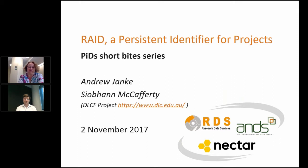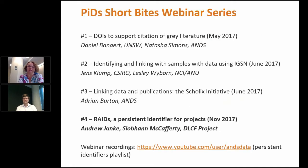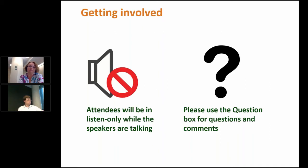This webinar is the fourth in a series examining persistent identifiers and their use in research. The first webinar looked at citing grey literature using DOIs, the second introduced the international geo-sample number for physical samples, and the third explored the global initiative called Scholix, which is linking data and publications. You can find the recordings of these webinars on the ANDS YouTube channel. I'd also like to acknowledge the Commonwealth Government for their support of ANDS Research Data Services and NECTA under the NCRIS program.